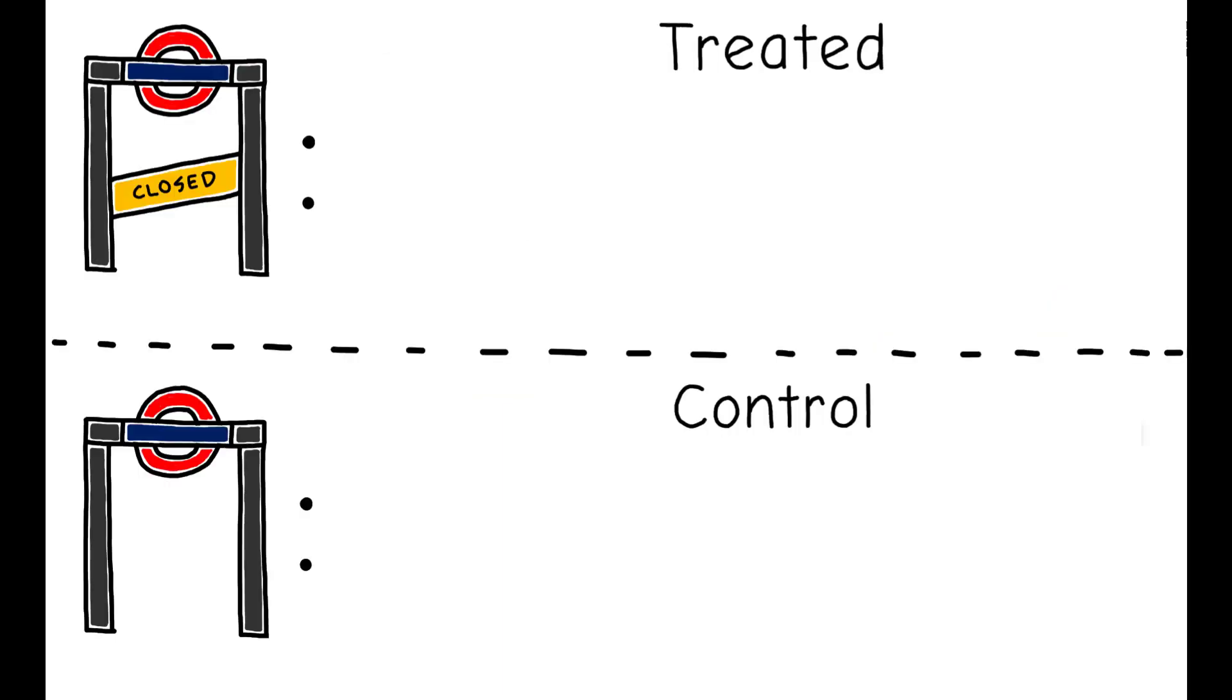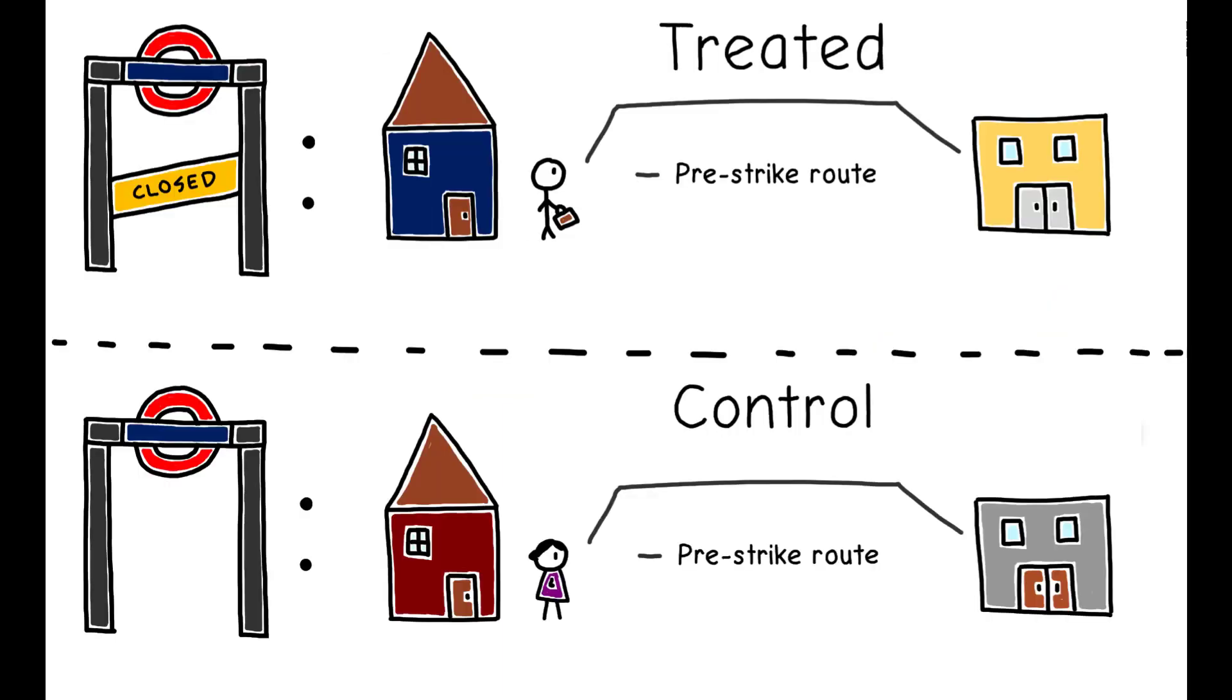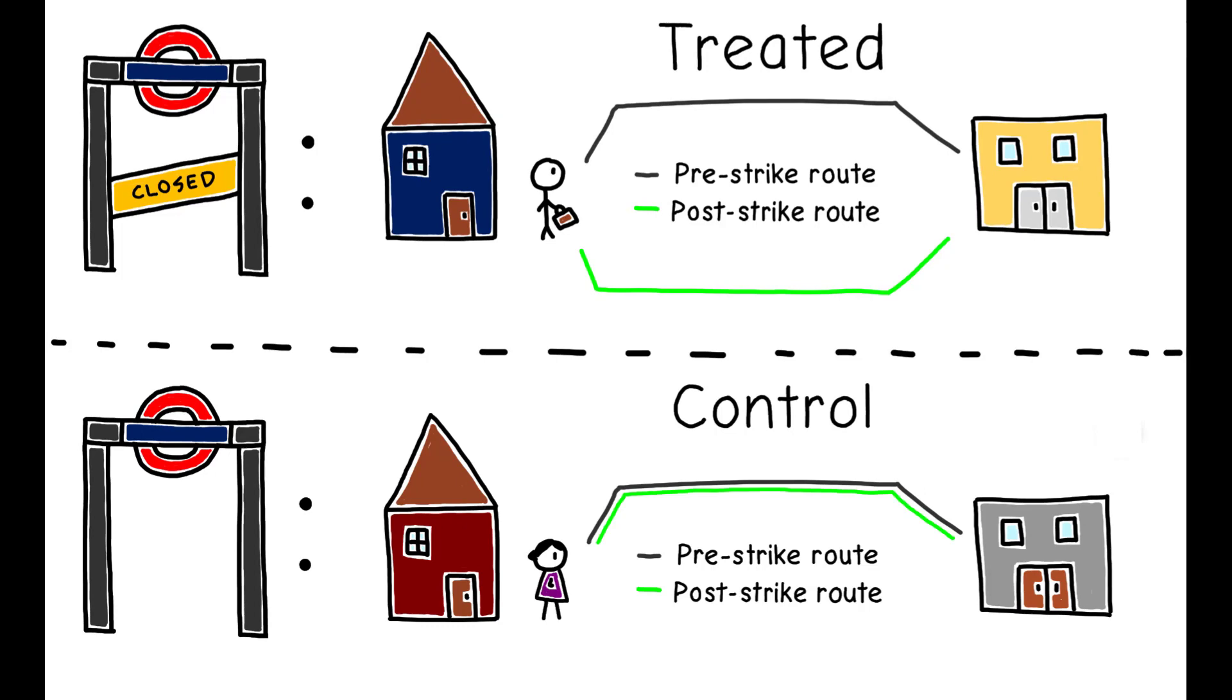The authors find that treated individuals who were forced to explore alternatives during the strike were, in fact, more likely than control individuals to switch away from their usual pre-strike route after the network was fully reopened. The fraction of switchers was 5.4 percentage points higher in the treated group relative to the control, and the authors show that switches were more likely to occur at the work, rather than at the home, end of commutes.